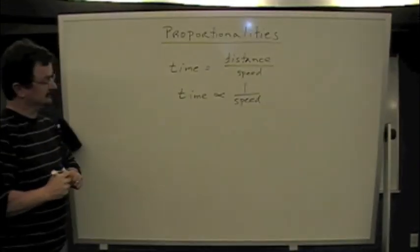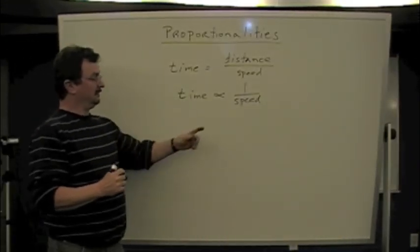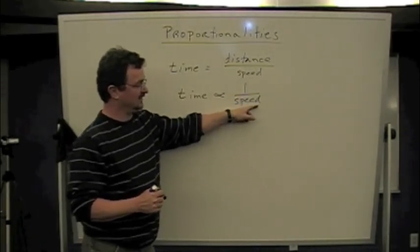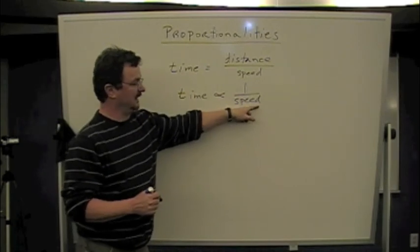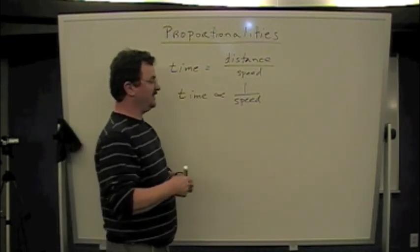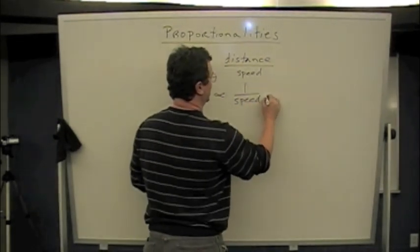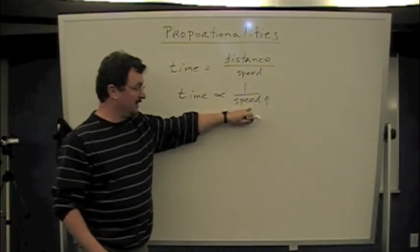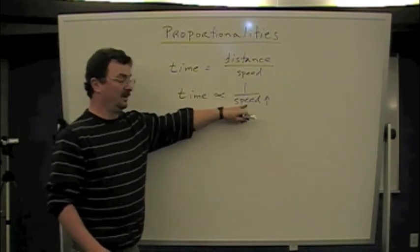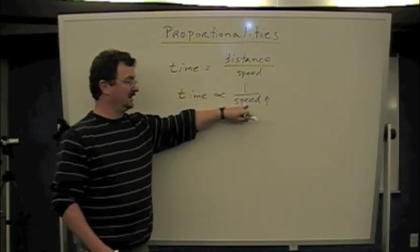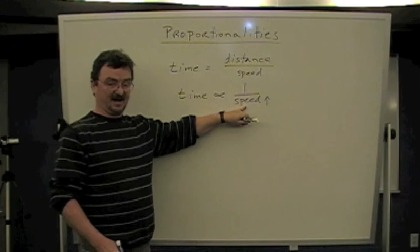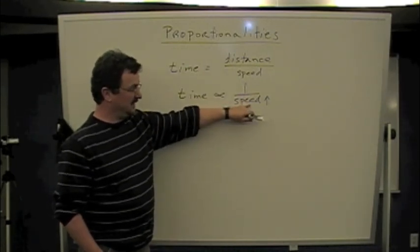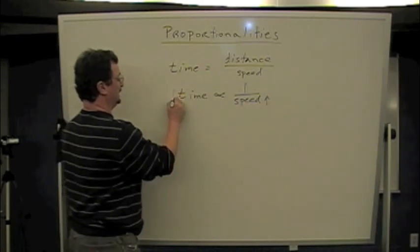But notice that speed is in the denominator here on the right-hand side. You're dividing by speed. So whenever you increase your speed, it means you're dividing by a bigger number. Whenever you divide by a bigger number, you get a smaller number. You know, one divided by a thousand is a bigger number than one divided by a million. So whenever the number on the bottom gets bigger here, the number on this side gets smaller.